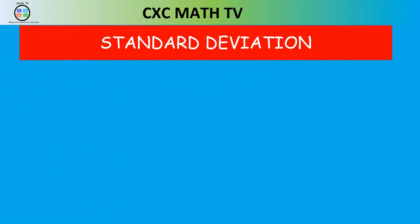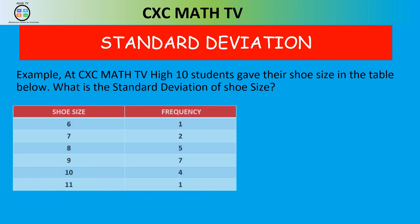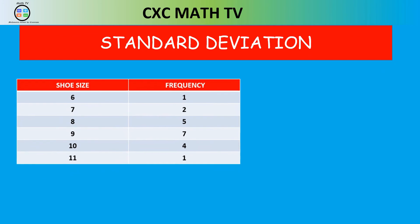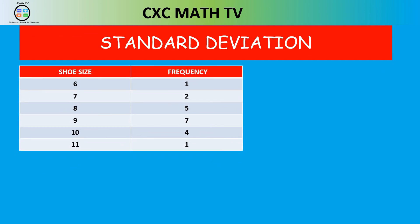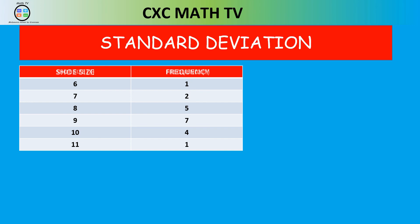Now what if you need to find standard deviation from a frequency table? Using the shoe size data, we apply the grouped data formula: √[(Σfx² − (Σfx)²/n) / (n−1)]. We already have the F×X column. Now we need an F×X² column — multiply each x² by its frequency. 6²×1=36, 7²×2=98, 8²×5=320.